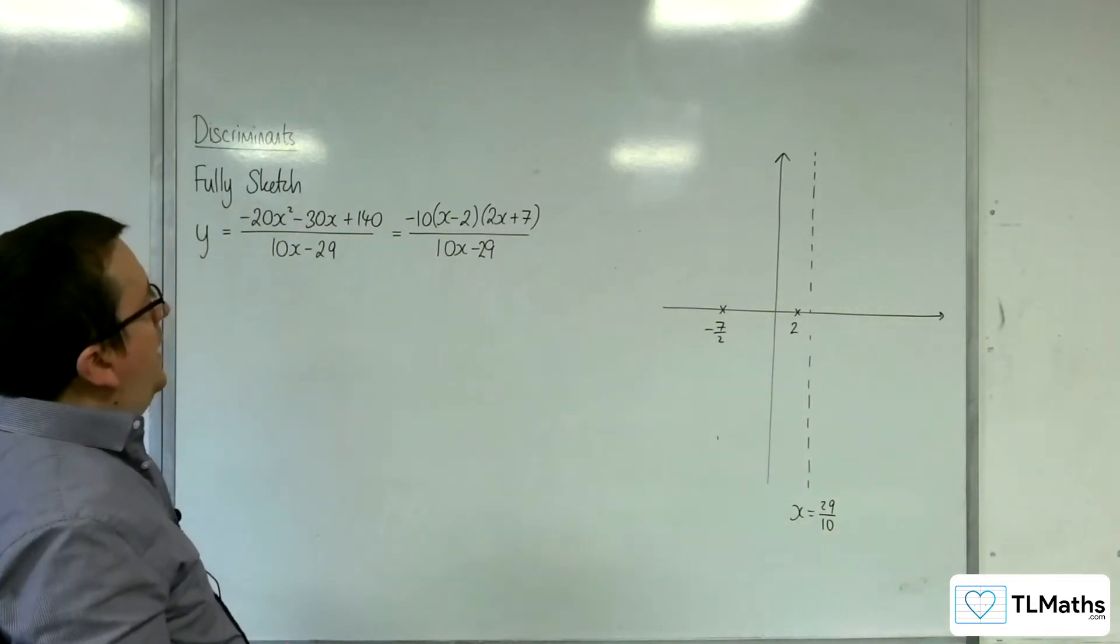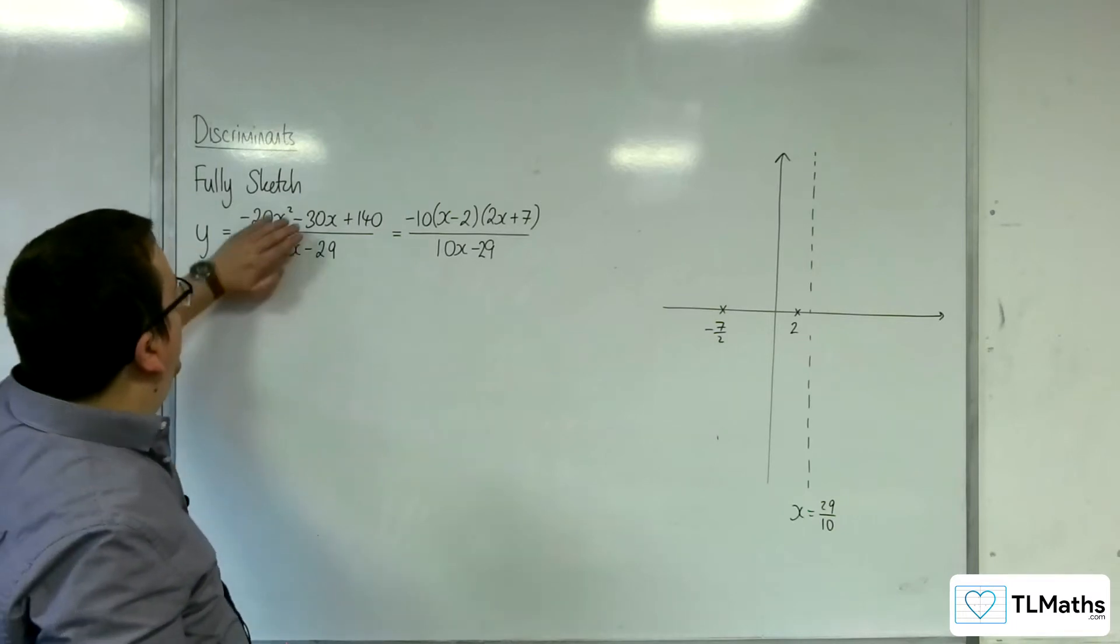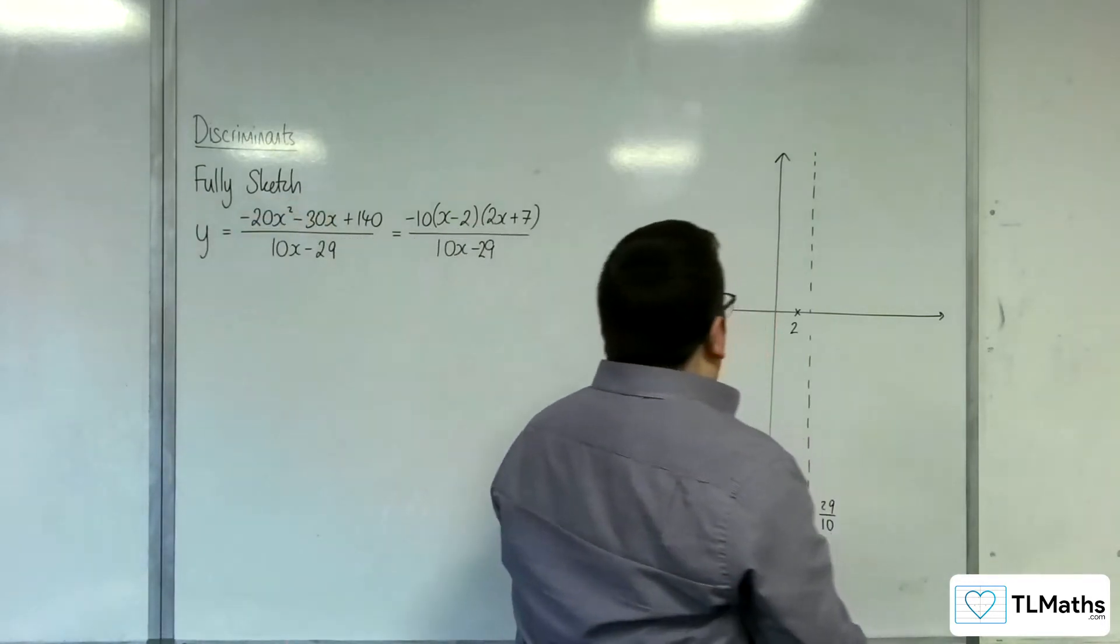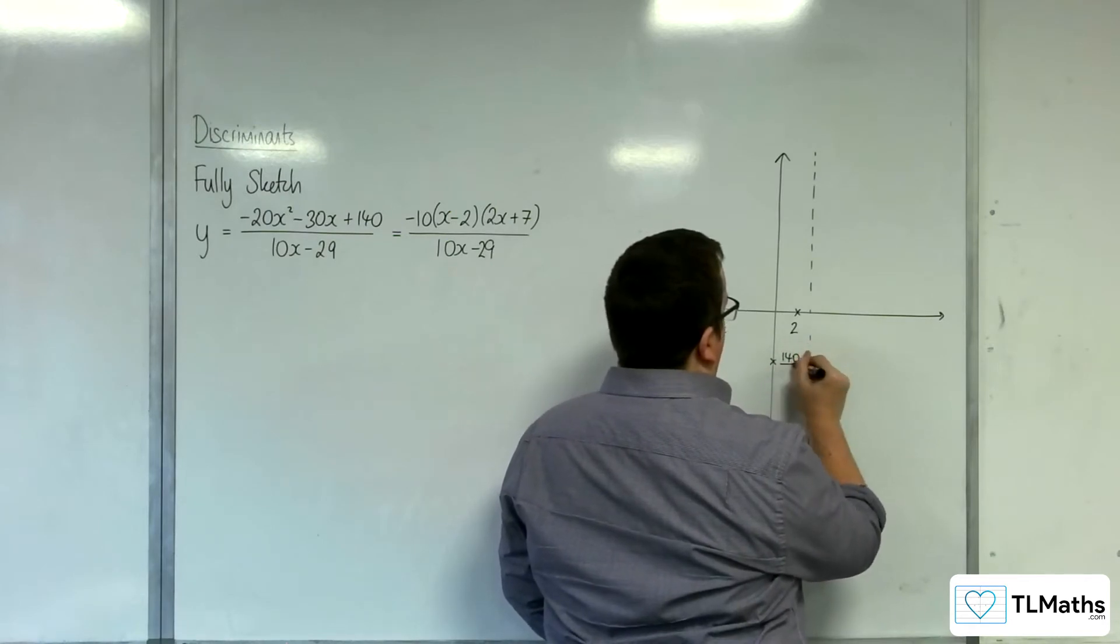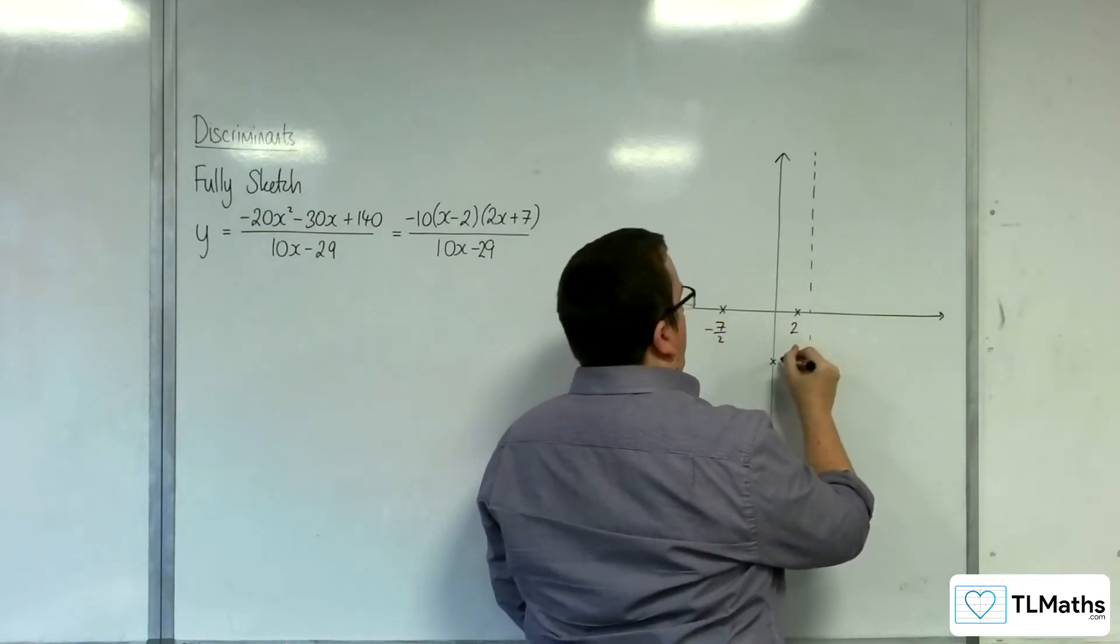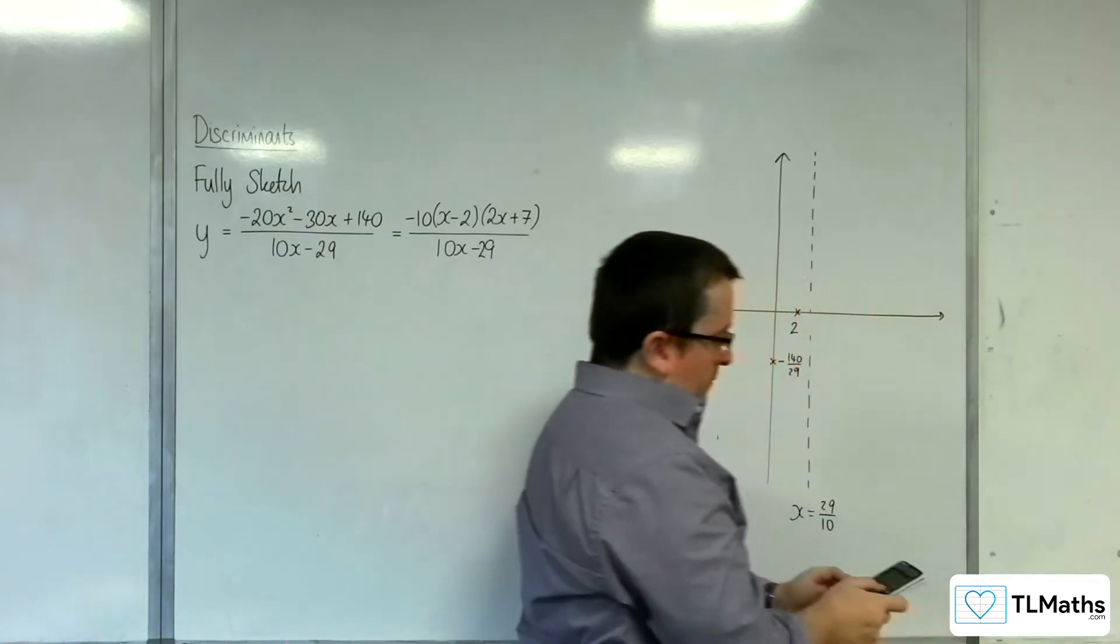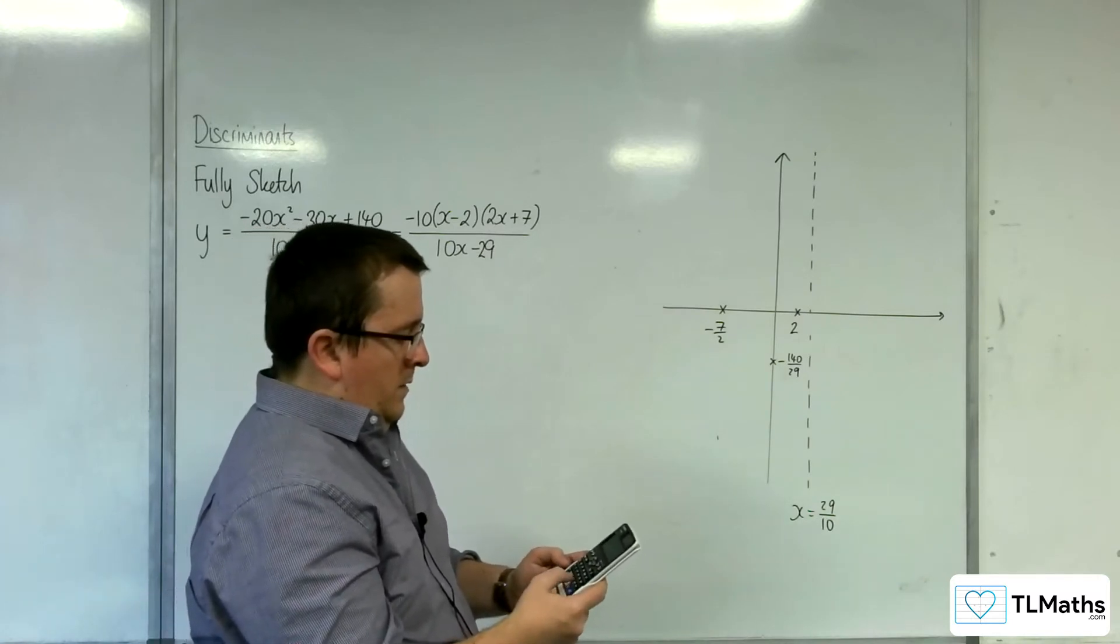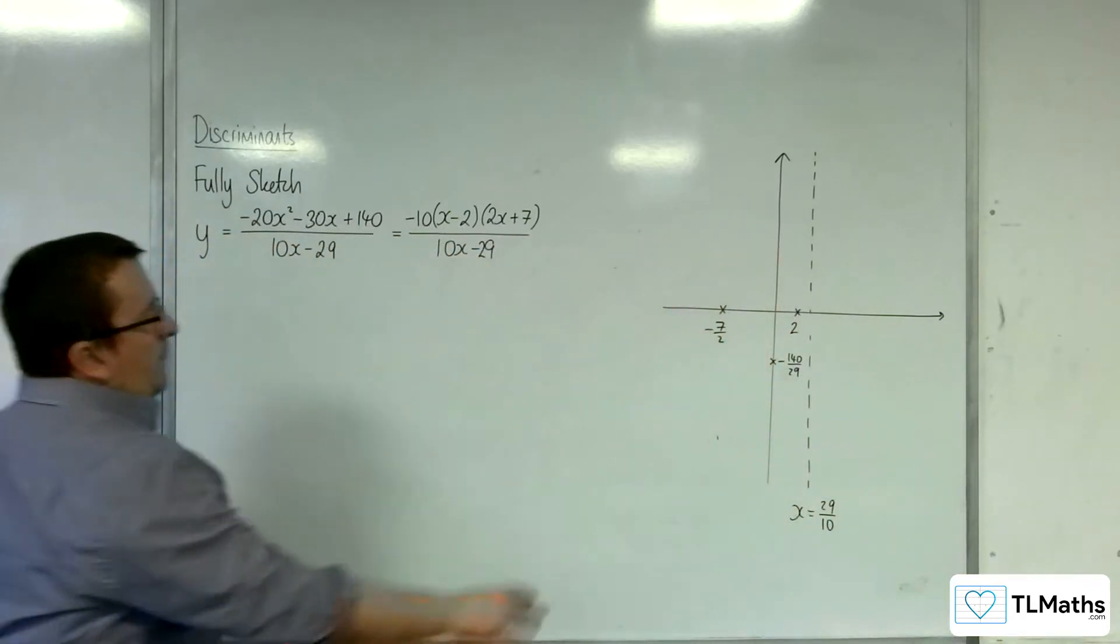How about where it's crossing the y-axis? That's when x is 0, so we're going to get 140 over minus 29. Let's just put it as minus 140 over 29. What is that approximately? About 4.8 to 1 decimal place.